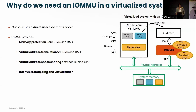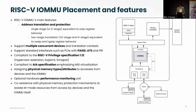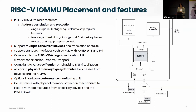Now I'm going to talk more about the actual RISC-V IO-MMU baseline architecture. The main feature is address translation and memory protection. The RISC-V IO-MMU supports single stage translation — the same as the SATP register in the core — and also two-stage translation, which is the VS stage and G stage, equivalent to the VSATP and HGATP registers in the cores. One specificity of the IO-MMU is that it has to support multiple concurrent devices. The IO-MMU is connected to a route and can have many different endpoints attached to it.